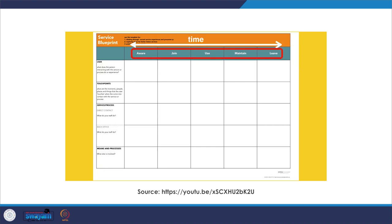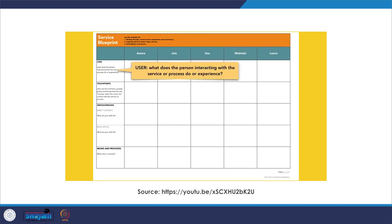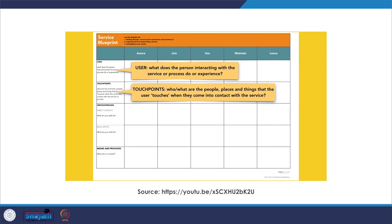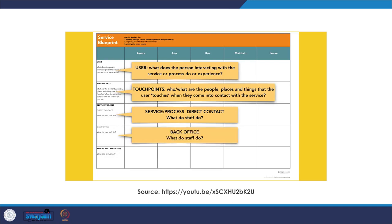The columns on the blueprint template refer to the different stages in the service experience: Aware, Join, Use, Maintain, Leave. Looking at each row: the first focuses on the user — what does the person interacting with the service do or experience? Next are touch points — who or what are the people, places, and things the user touches when in contact with the service? Then front stage — what staff actually do and how they interact with the user. Then backstage or back office — what are staff doing there? Finally, means and processes — what other processes and resources are needed to deliver the service?